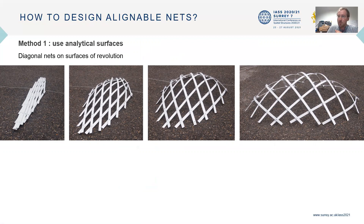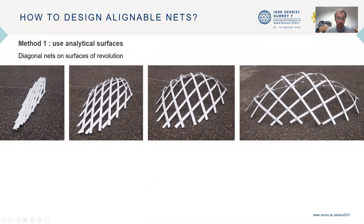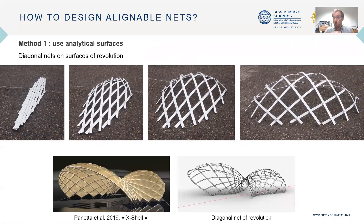These analytical surfaces offer a first way to design alignable nets, particularly using diagonal nets of revolution. With this, you can get self-shaping grid shells that will pop up in a desired shape as you open them, simply by drawing curves like geodesics on a target surface. Interestingly, if we look at reference work from Panetta and Hall, many of the proposed models can be roughly approximated by diagonal nets of revolution.